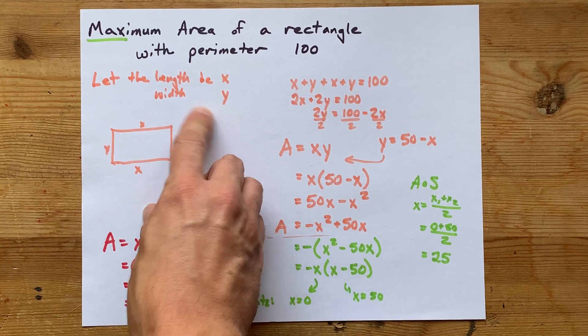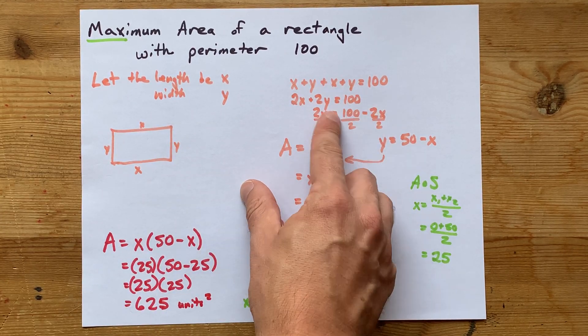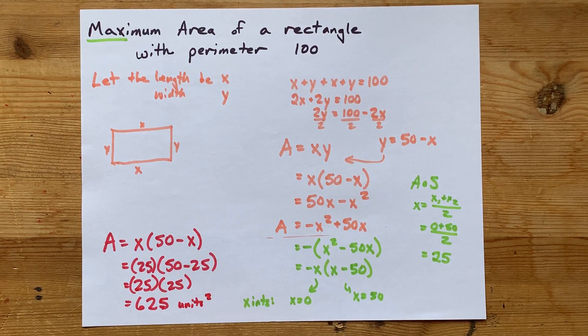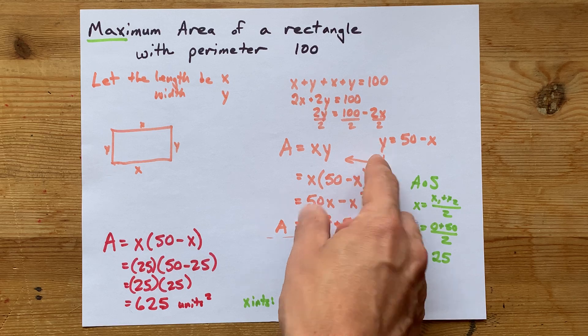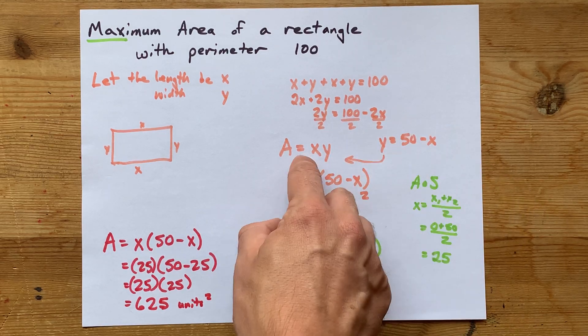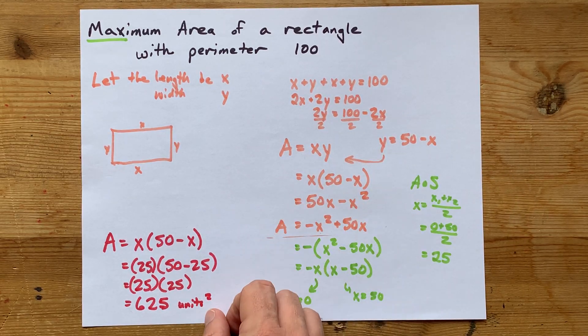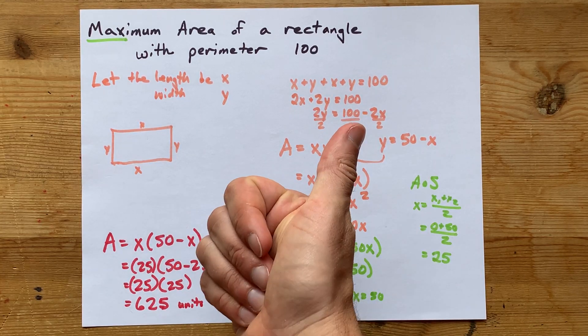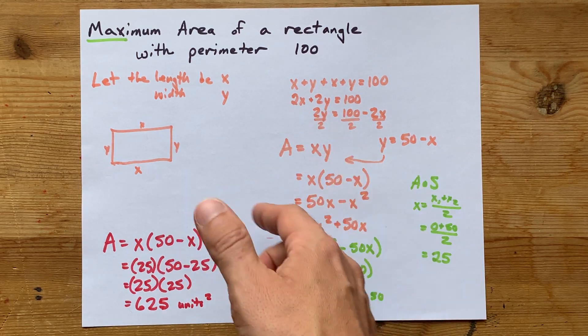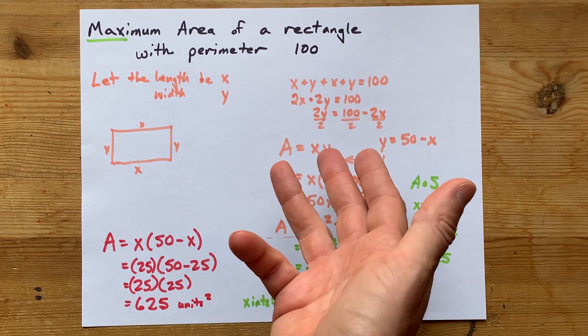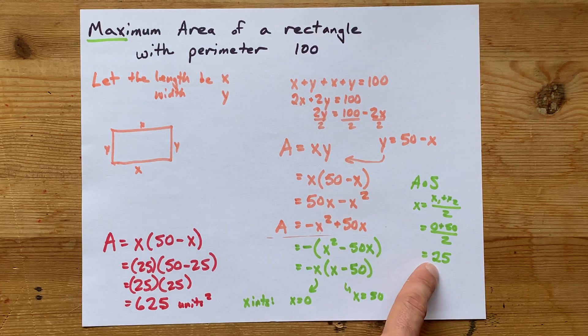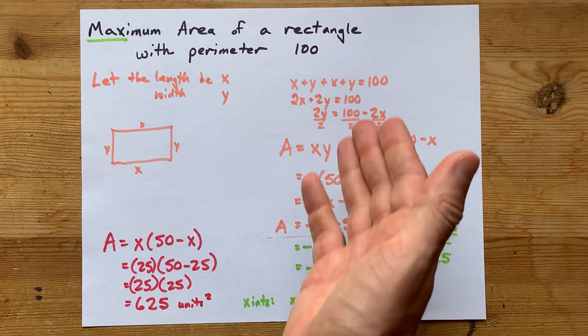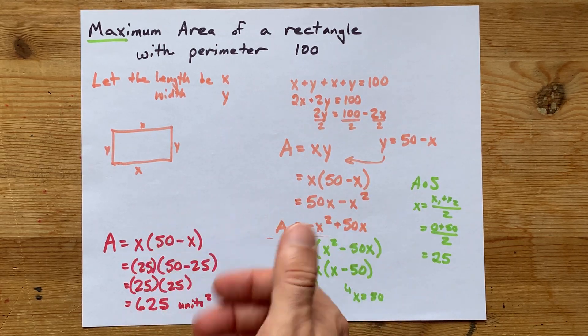Let x and y be your length and width. Get an expression for y in terms of x by using the perimeter you were given. Use that isolated value for probably y in your area expression, length times width. Get the vertex any way you know how, factoring vertex form, completing the square, negative b over 2a, whatever, to get a value of x that represents where the vertex is. Then you can plug that into the area formula to get the actual area.